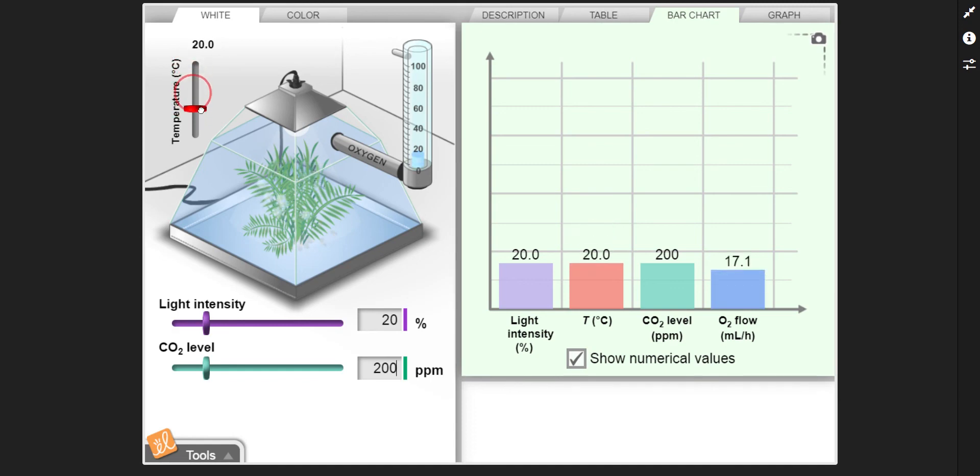So let's see if we can find the limiting factor in this one. We increased temperature. Did we get more? Yeah, we got some more. So let's go and check light intensity. Oh, no, we didn't get any more from light intensity. CO2 levels. Oh, no, we didn't get any more with CO2 levels. So it looks like for this question, our limiting factor is temperature because when we increase or decrease temperature, we do get a change.